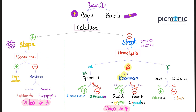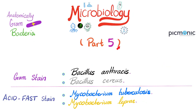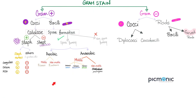In video three we talked about the catalase positive gram positive cocci — the staphs — and in video four the streptococci. Video five was anthrax, Bacillus cereus, TB, and leprosy. Do you remember the two types of leprosy? Let me know the answer in the comments. We're done with gram positives.